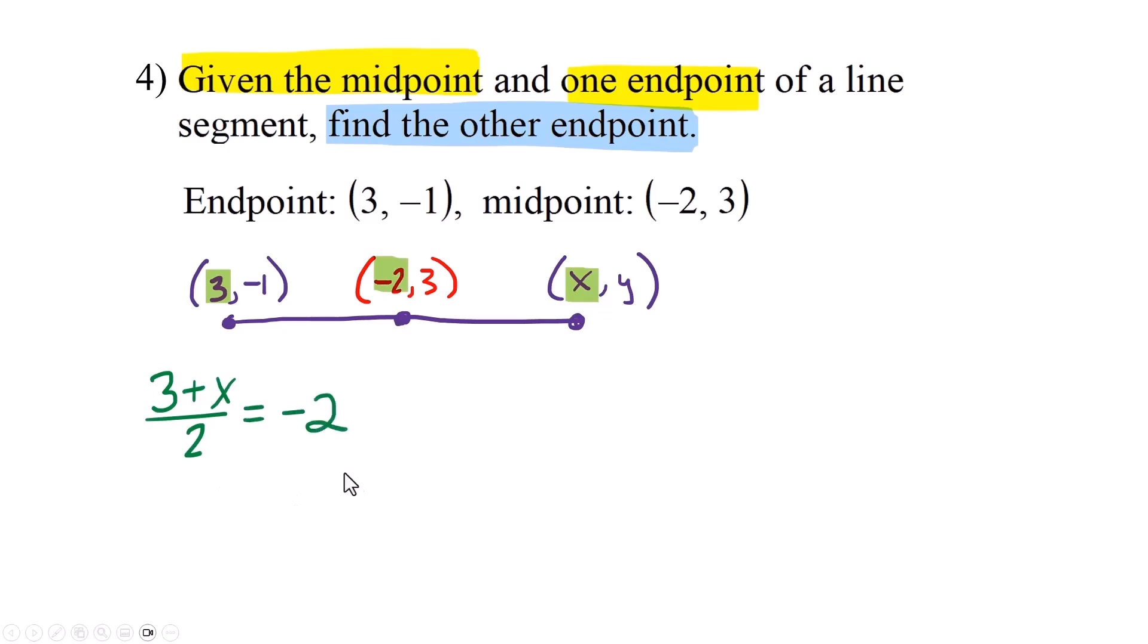All right, so that's one little equation I need to solve. Start by multiplying that by 2 to cancel that fraction. Then if you multiply one side by 2, you're going to multiply the other side by 2. We end up with 3 plus x equals negative 4. And then subtracting 3 from both sides, we get x equals negative 7. So this x will be negative 7.